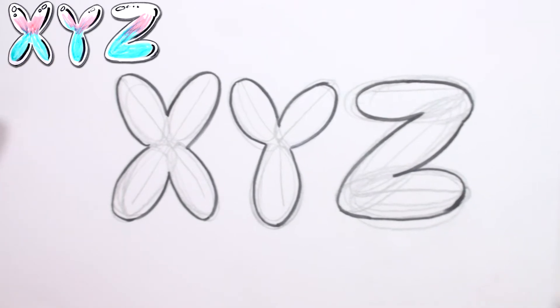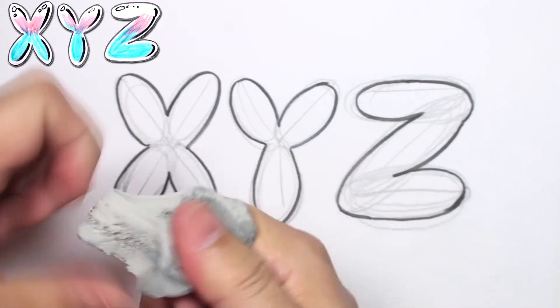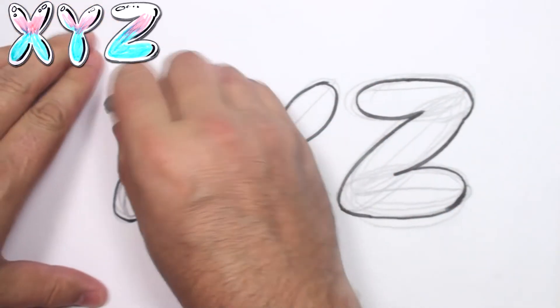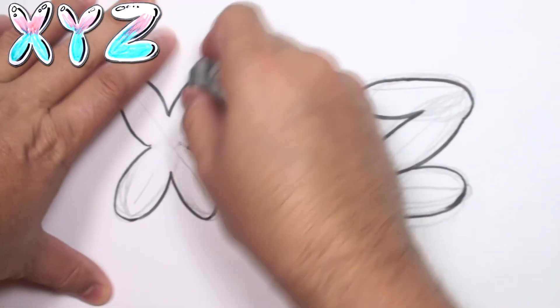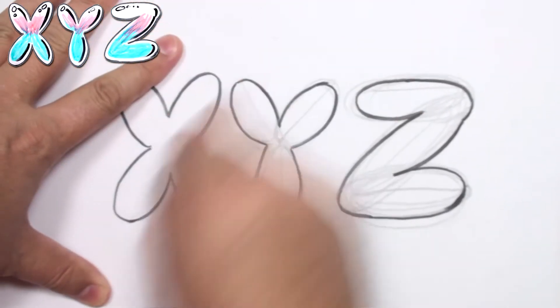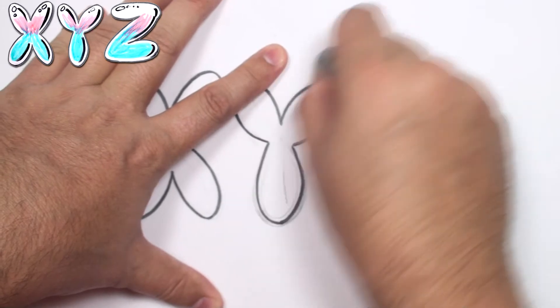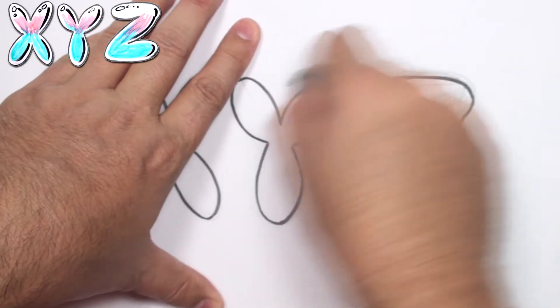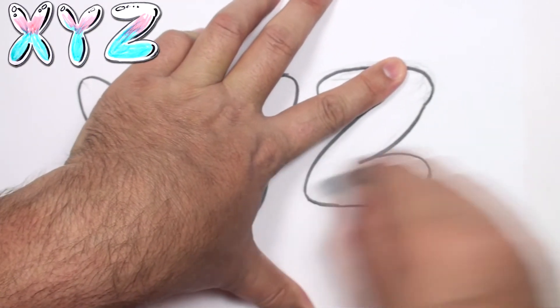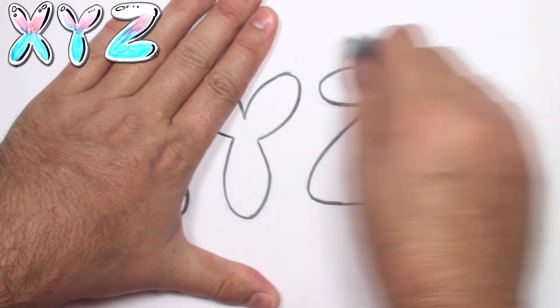And there we have the X, Y, and Z. Time to erase our pencil lines. Using the kneaded eraser, it's like a big piece of gum. Probably wouldn't taste too good though. There we go. Get that all cleaned up.